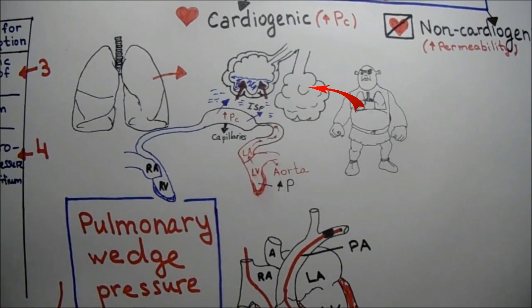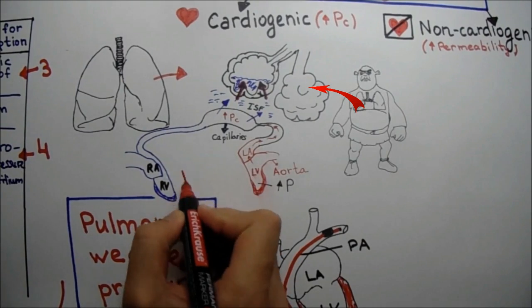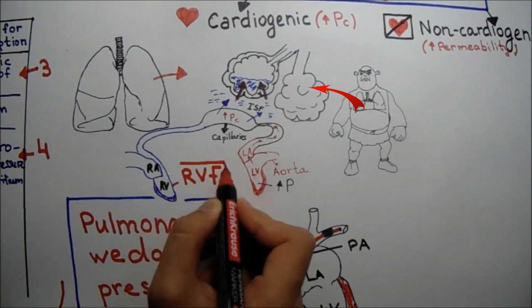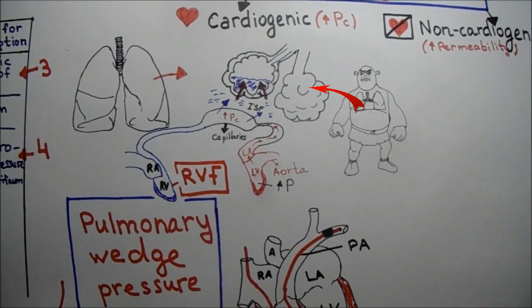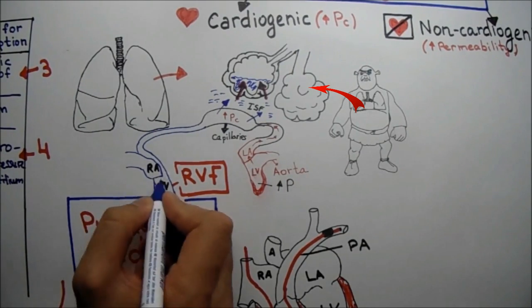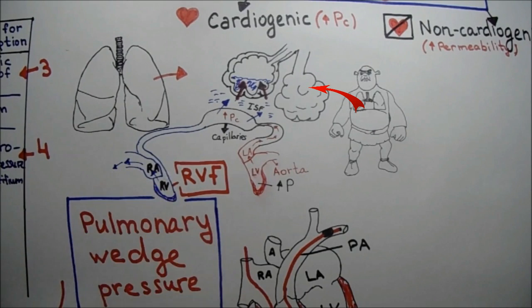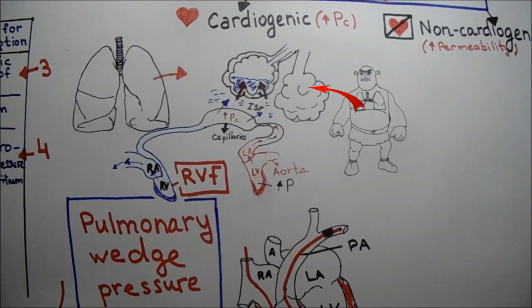Let's suppose in the second case the patient has right ventricular failure. When the right ventricle fails, blood cannot properly return back to the heart. The blood will go back to the systemic capillaries. When the left ventricle fails, blood goes up to the pulmonary capillaries, and when the right ventricle fails, blood will go back to the systemic capillaries.